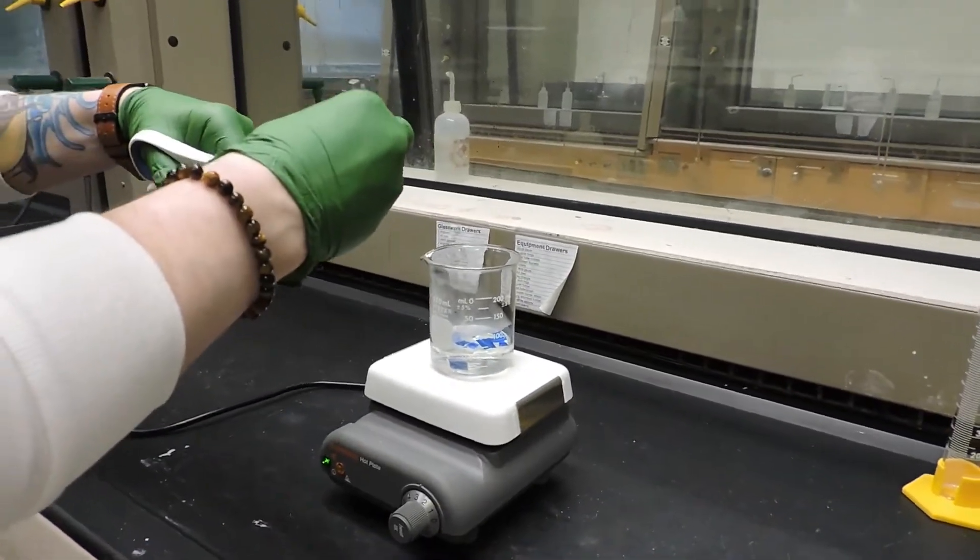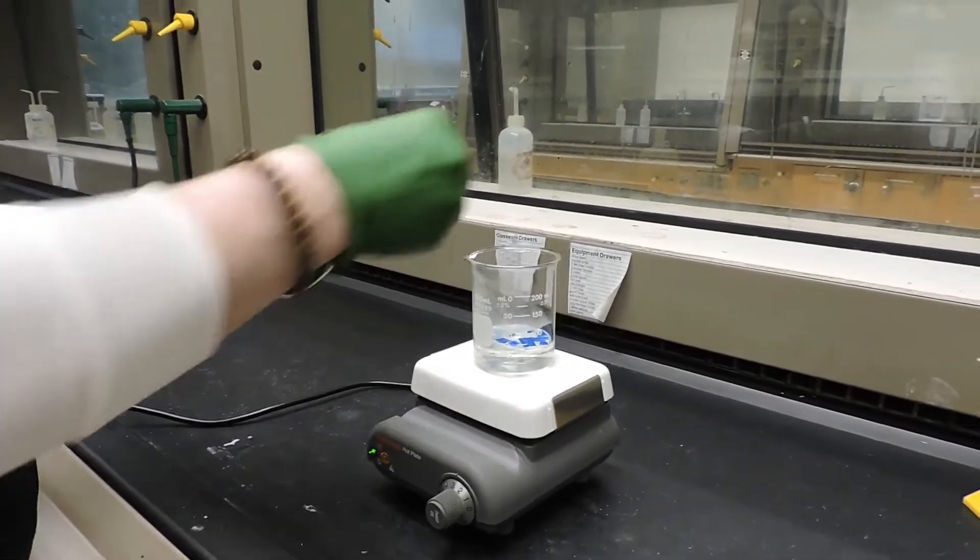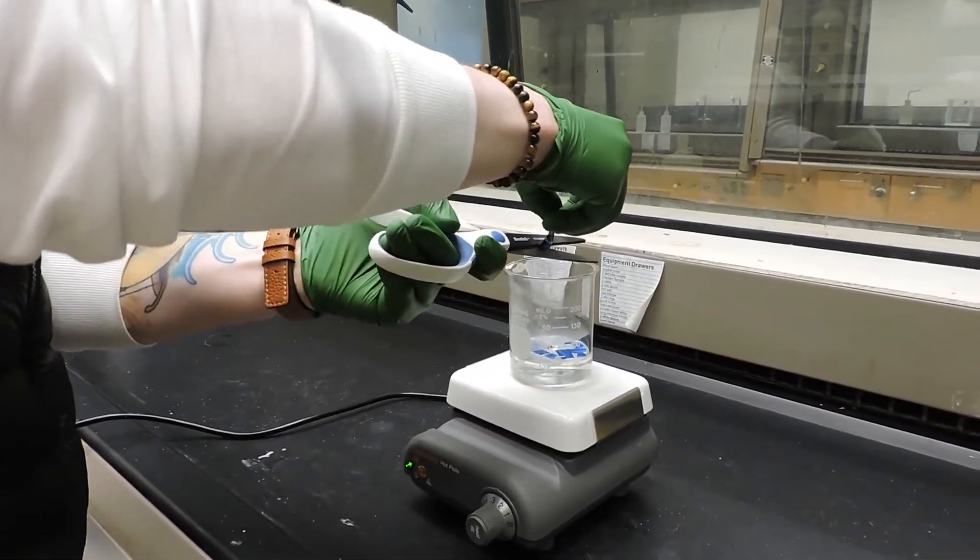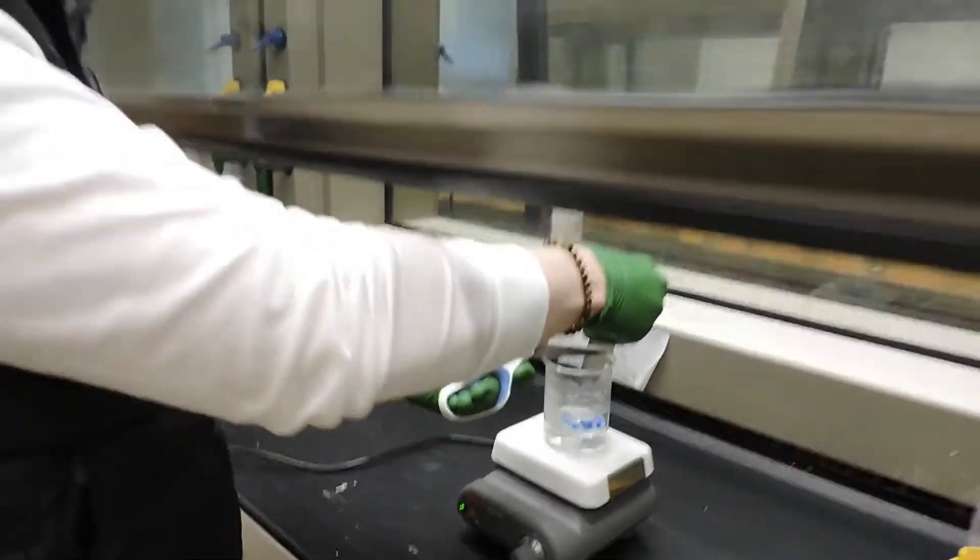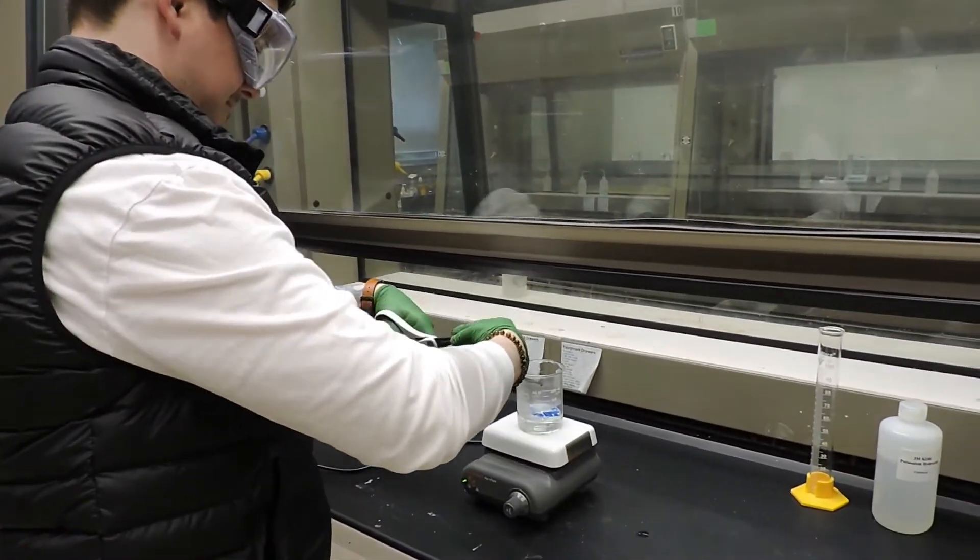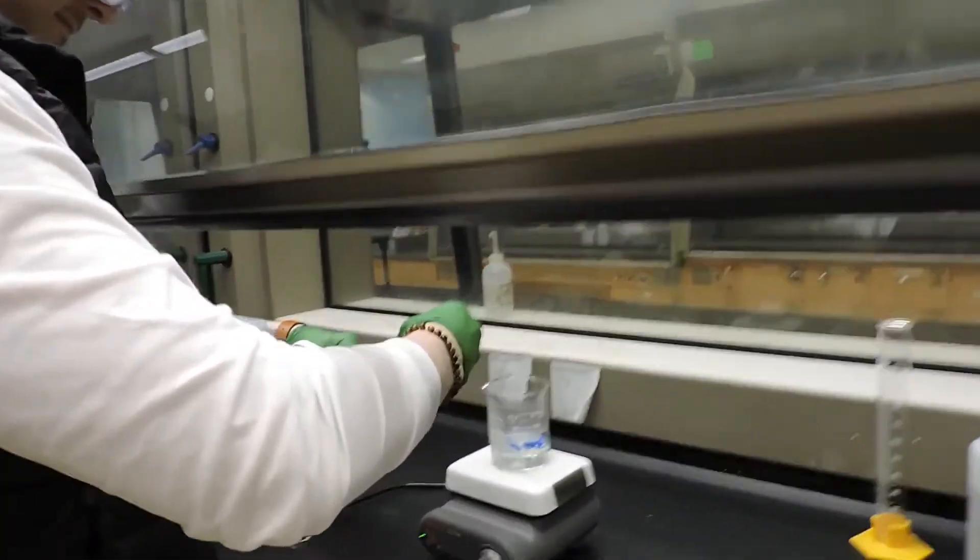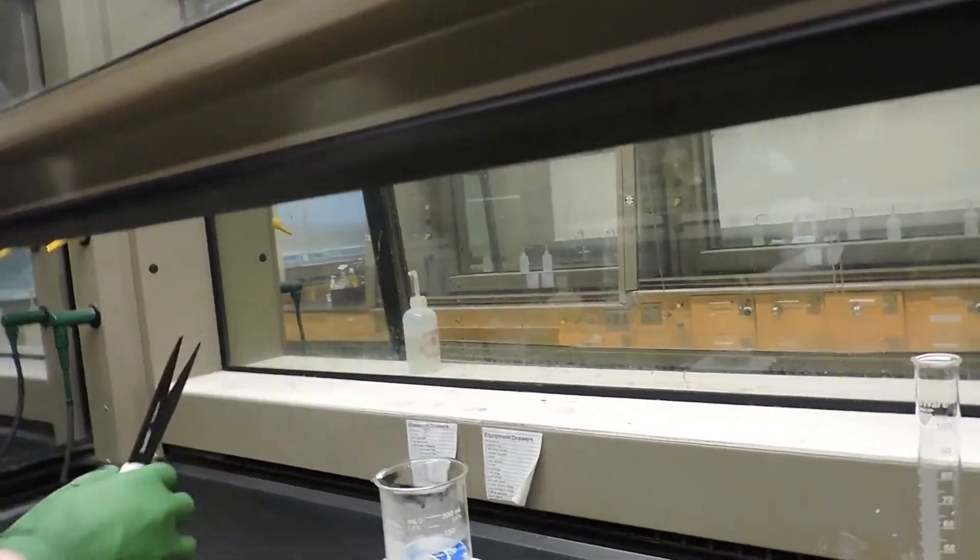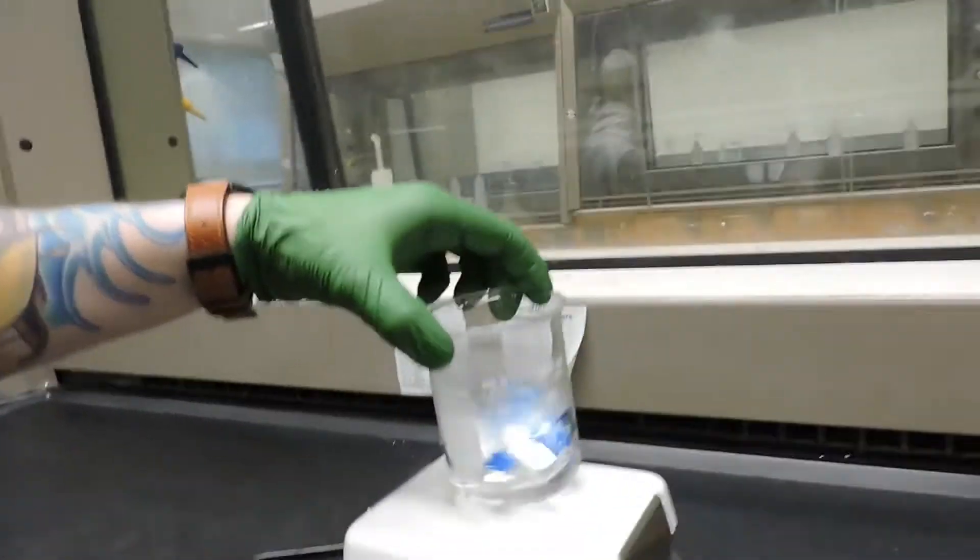On this hot plate, the aluminum is going to dissolve and give off hydrogen gas, which is why we have our sash down because we don't want to be breathing that in. And in about 10 minutes all the aluminum should dissolve.